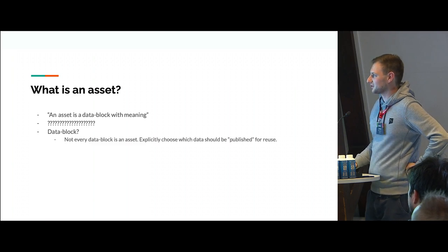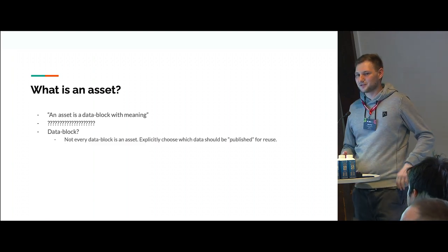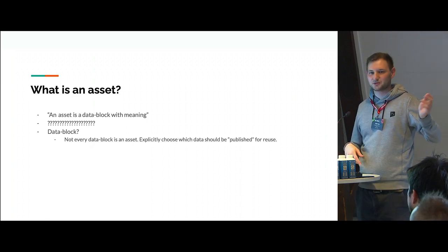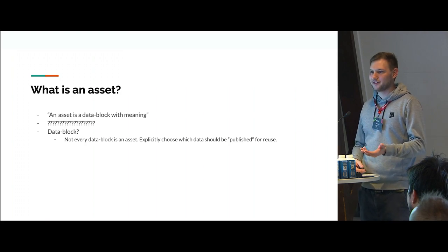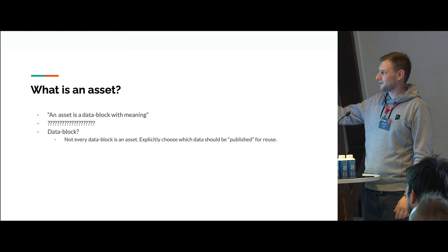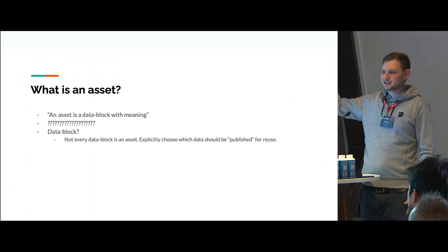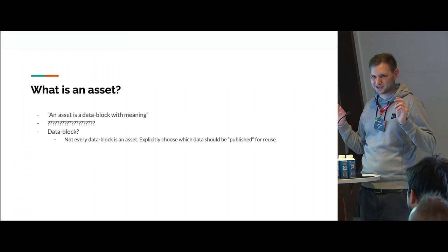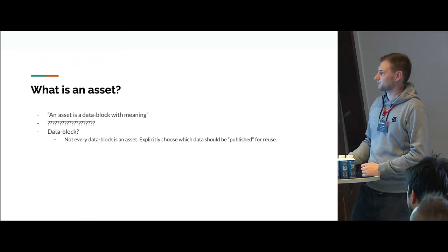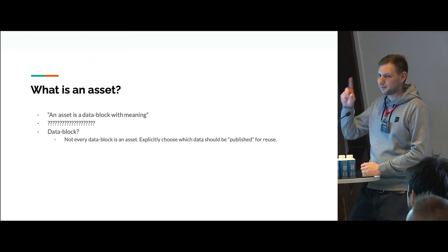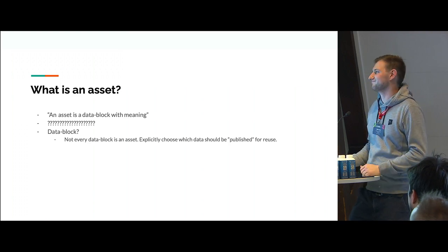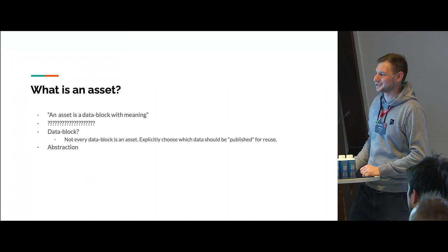All the main data in Blender is a data block — scenes, collections, objects, materials — everything. If you open Blender it already has maybe 30-40 data blocks, but you don't want all of that in your asset library. So the idea is that you do some kind of publishing step where you say 'I want this to be available as an asset.' Currently we have Mark as Asset in Blender, which can be useful, but maybe it's not as easy to use as it should be.